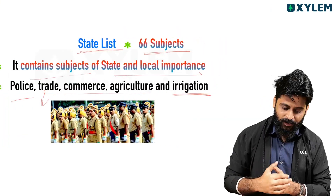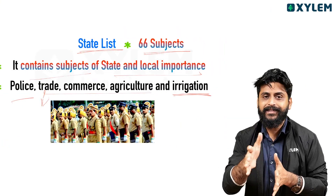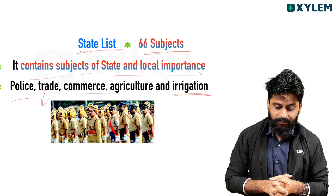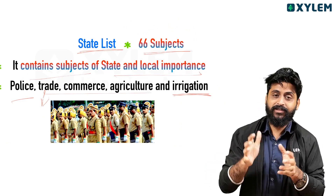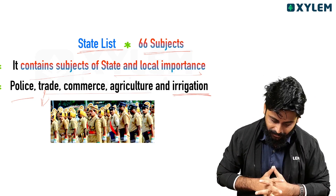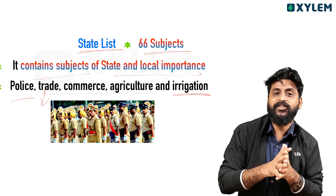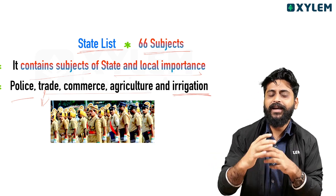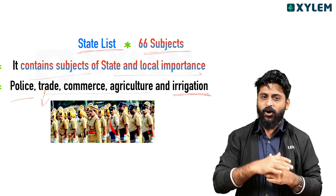The second one is the state list. There are almost 66 subjects on the state list. It contains subjects of state and local importance, including police, trade, commerce, agriculture, and irrigation. Laws on these subjects are decided by the state government.